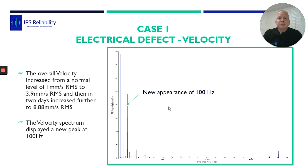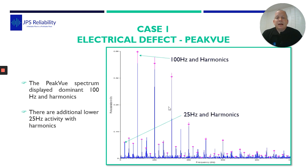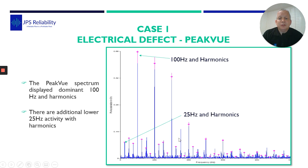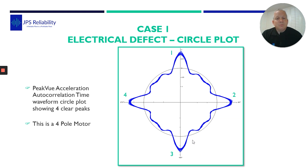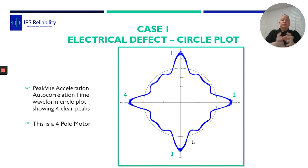So this is the velocity spectrum where we can see — which wasn't there before — a 100 hertz speed component. Then what we did, we took some peak view data and found lots of electrical noise, which peak view does tend to pick up. But this was the change in the pattern: we have lots of 100 hertz series and also 25 hertz harmonics. To look at the data differently, we put it in a circular plot. We ensured the RPM was spot on, 100%. On the circular plot you could see there are four pulses per rotation of the shaft.